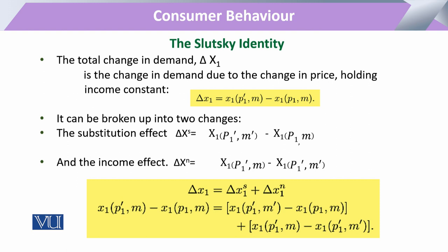The total change in quantity demanded due to a change in price, holding all other factors constant, can be decomposed or broken into two separate components. One part is the substitution effect and the other part is the income effect. When we add up the income and the substitution effect, we arrive at the total effect — the total change in quantity demanded due to the change in price.